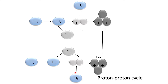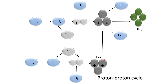That deuterium atom along with another proton produces a helium isotope. Now when these two helium isotopes get combined and fused with each other, they produce helium and release two protons back into nature. So by the combination of protons we are getting the heavier nucleus, which is helium. This is the proton-proton cycle.